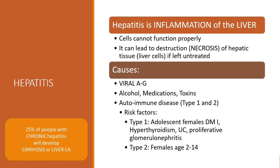Autoimmune disease can also cause liver inflammation. There are two types. Type I occurs in adolescent females, usually with diabetes type I, hyperthyroidism, ulcerative colitis, or proliferative glomerulonephritis. Type II typically occurs in females between the ages of 2 and 14.